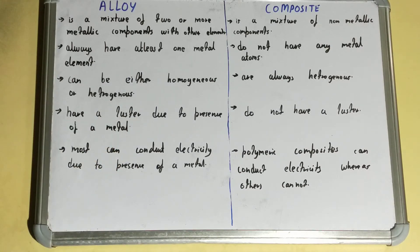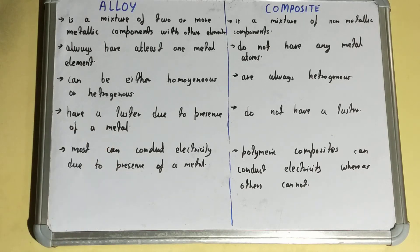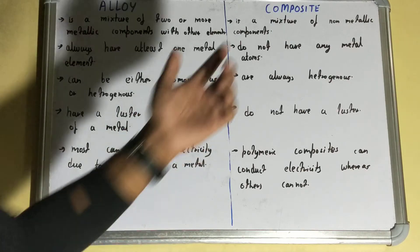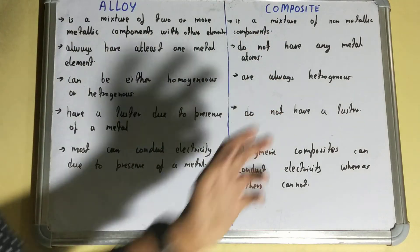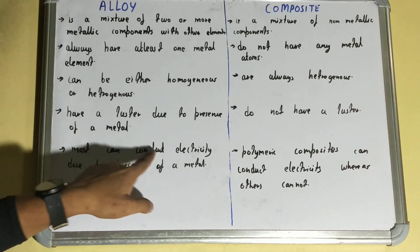Next, if we talk about the alloy, alloy has a luster — a kind of soft glow — due to the presence of a metal. Because metal is present, alloy has a kind of shine or soft glow. But if we talk about the composite, they do not have a luster because they do not contain metal in them.